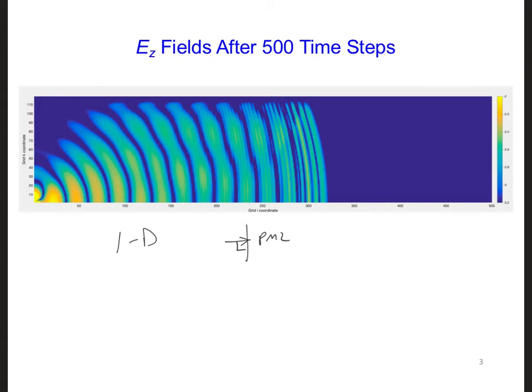But in the two-dimensional grid here, we can see that even for our waveguide application, we have waves that are propagating at other angles. These waves are not all going to be normally incident on the right boundary of our grid when they reach the end of the grid.